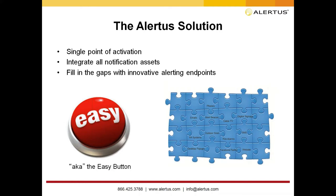Alertus provides a single point of activation — not just a web interface, but also a mobile phone, panic button, or automated alert — and all messages go out to integrated assets. We bring in digital signage, cable TV, VoIP phone systems, PA systems, fire alarm systems, and computer desktops. We also fill gaps with innovative alerting endpoints through our patented alert beacon and panic button capabilities — for example, covering a loading dock where a traditional PA system might not work by quickly placing an Alertus alert beacon there.